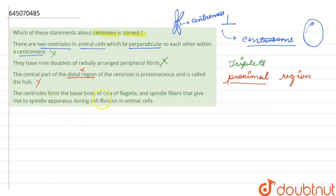The last one is: the centrioles form the basal body of cilia and flagella and spindle fibers that give rise to spindle apparatus during cell division in animal cells. This statement is absolutely correct. The centrioles help in the formation of cilia and flagella and the spindle fibers that are formed during cell division. So the correct answer is the last option.